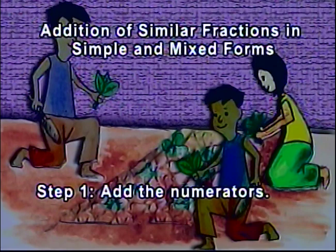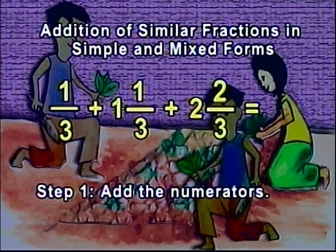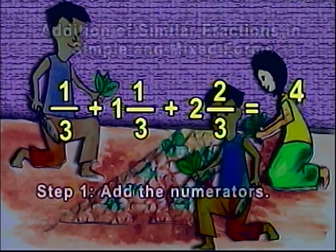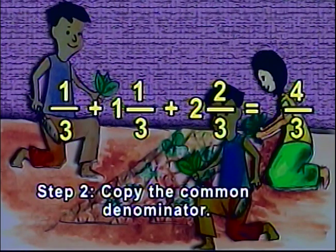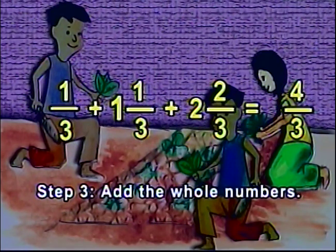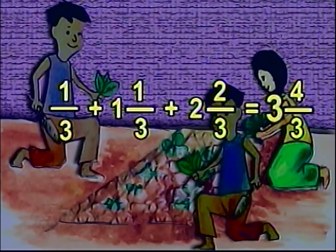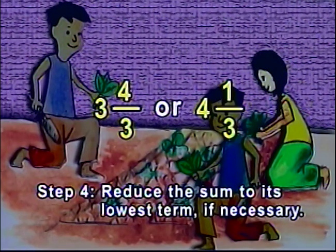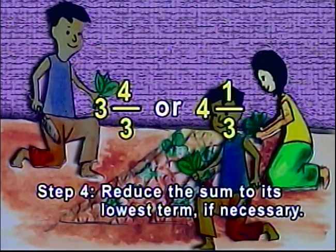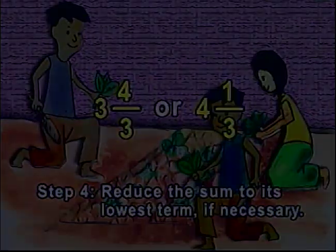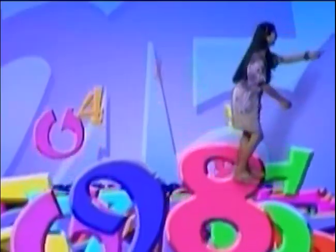To get this, first add the numerators: 1 plus 1 plus 2 equals 4. And then copy the common denominator 3. Then add the whole numbers: 1 plus 2 equals 3. The sum is reduced to its simplest form when necessary. 4 and 1 thirds of the plots in the old lady's backyard has been planted with vegetables.